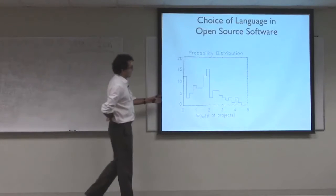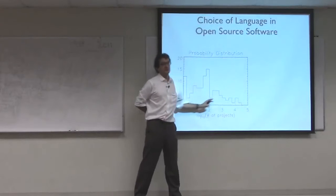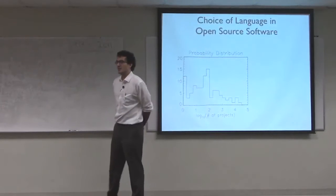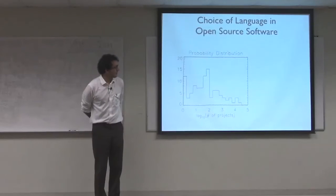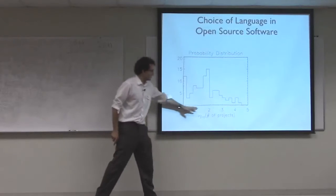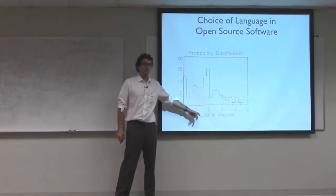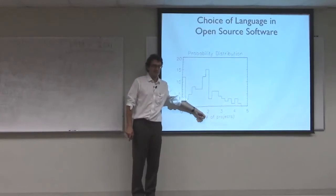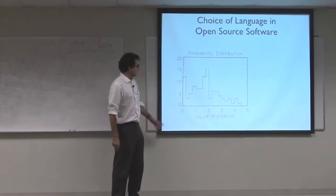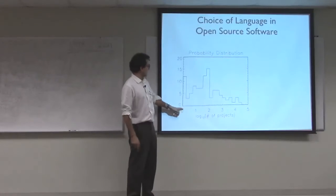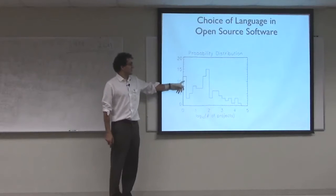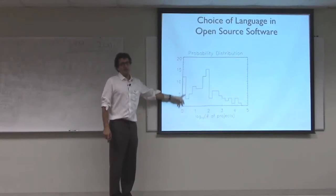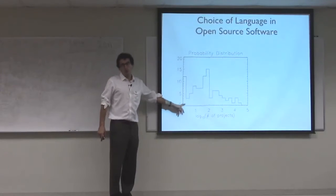Here what I've plotted is a distribution of languages used in the open source community found on SourceForge. On the x-axis here is the log of the number of projects written in a particular language. And you can see, log zero, that's one. So in the database here, there's about twelve languages that have only around order one project.